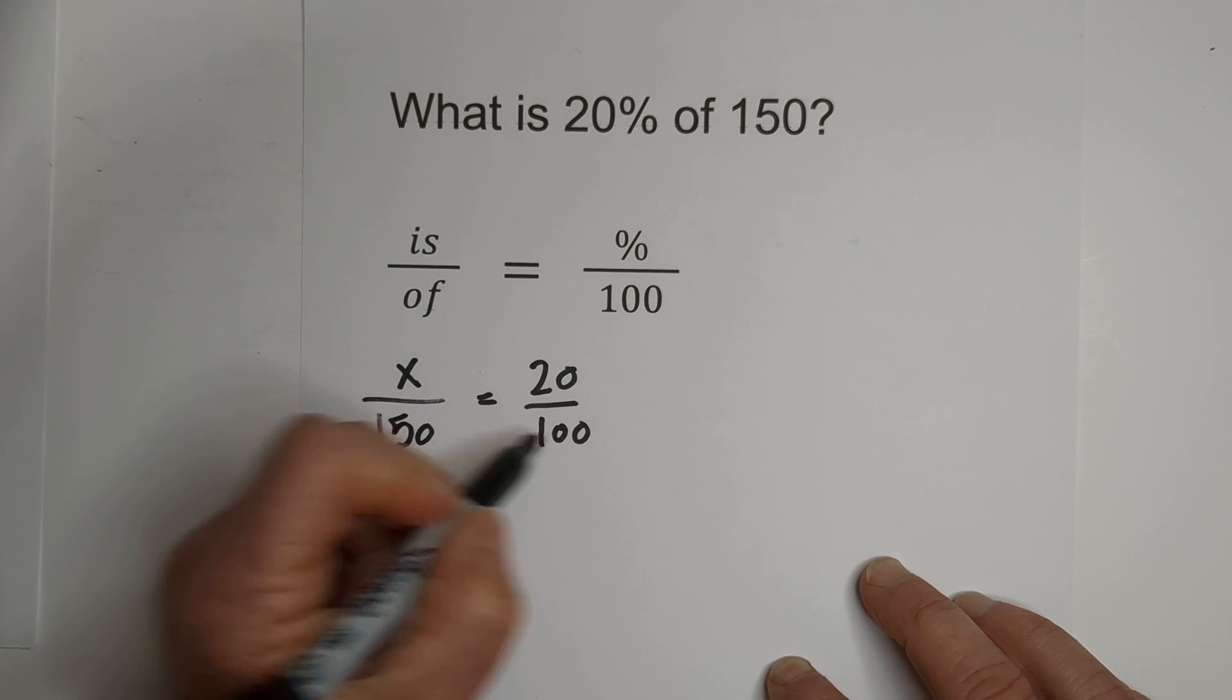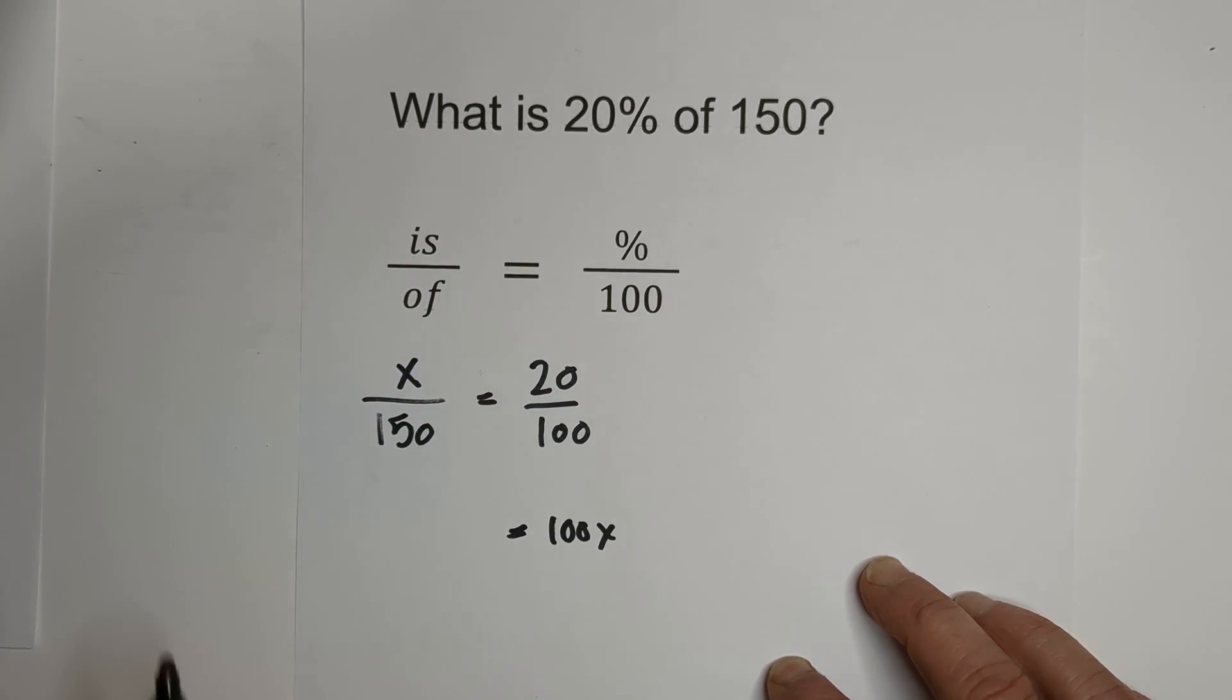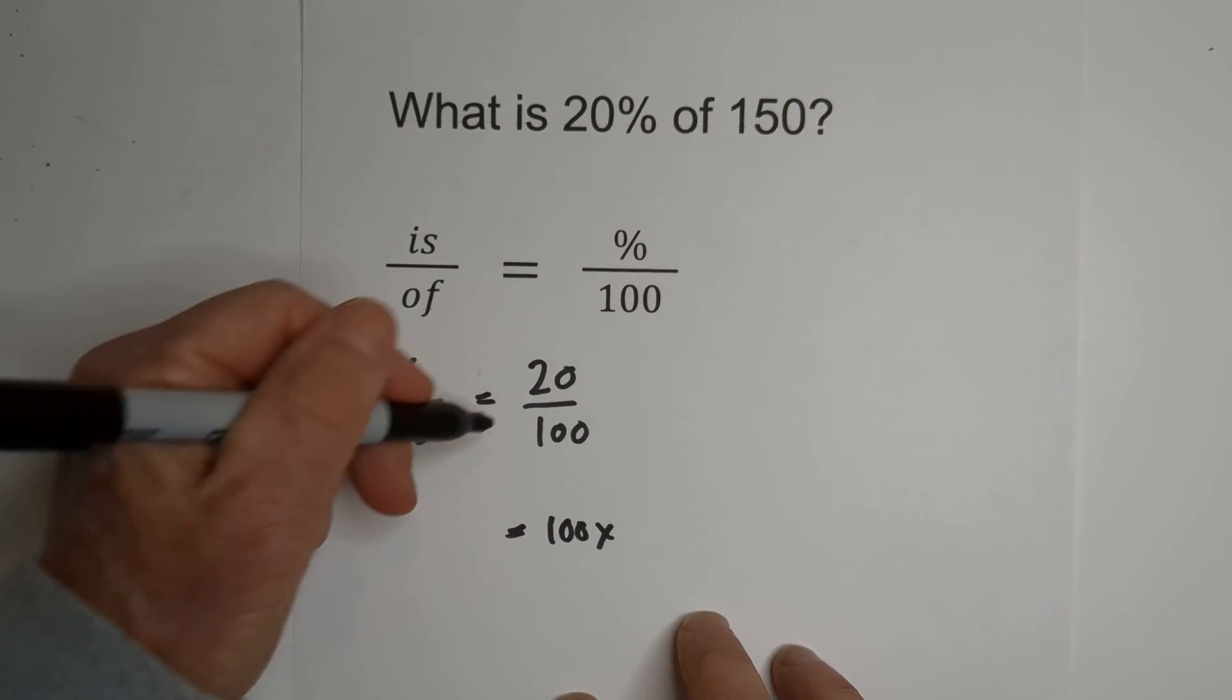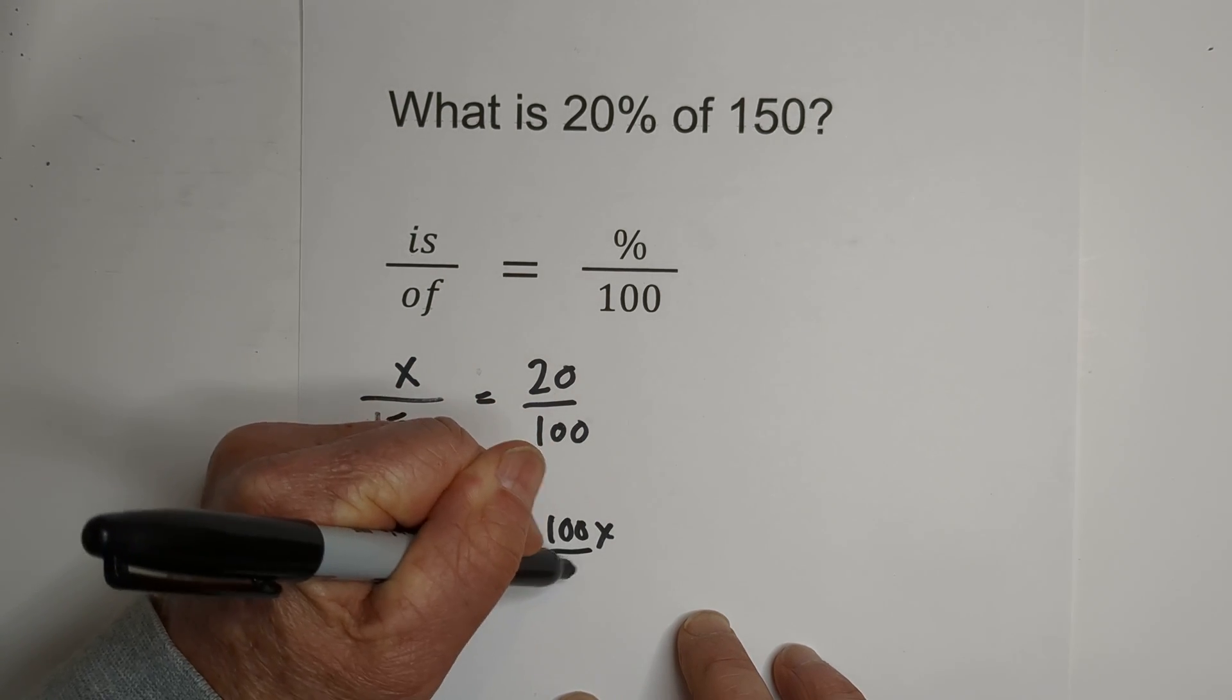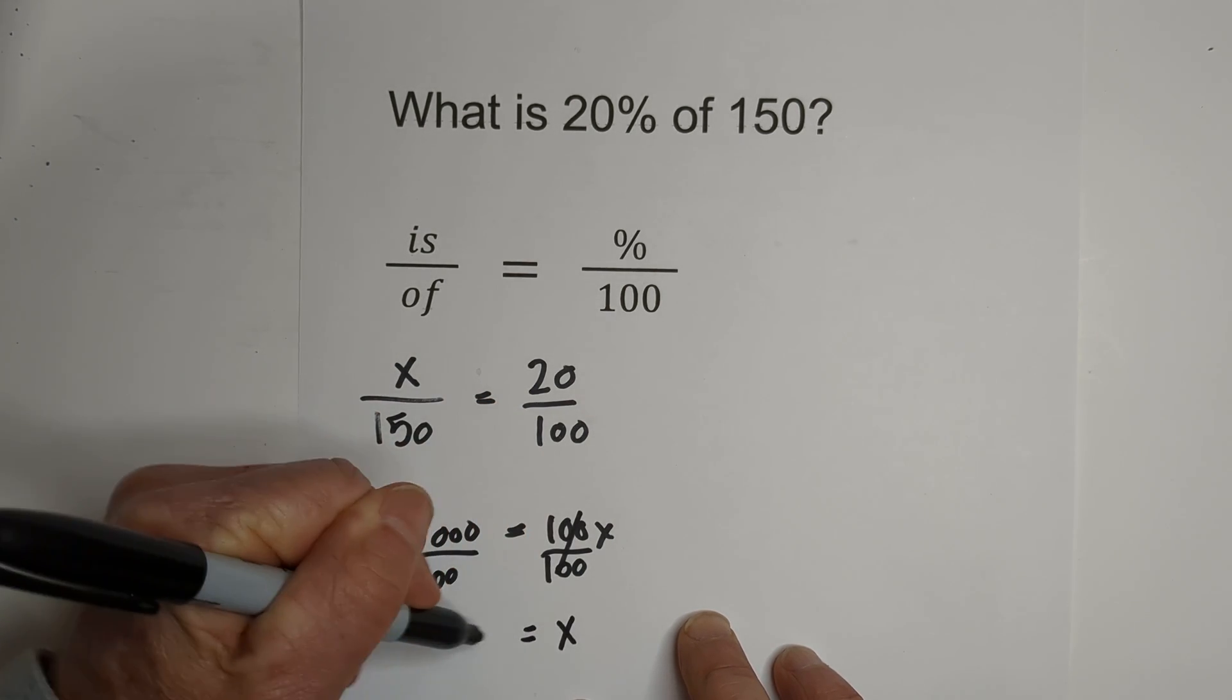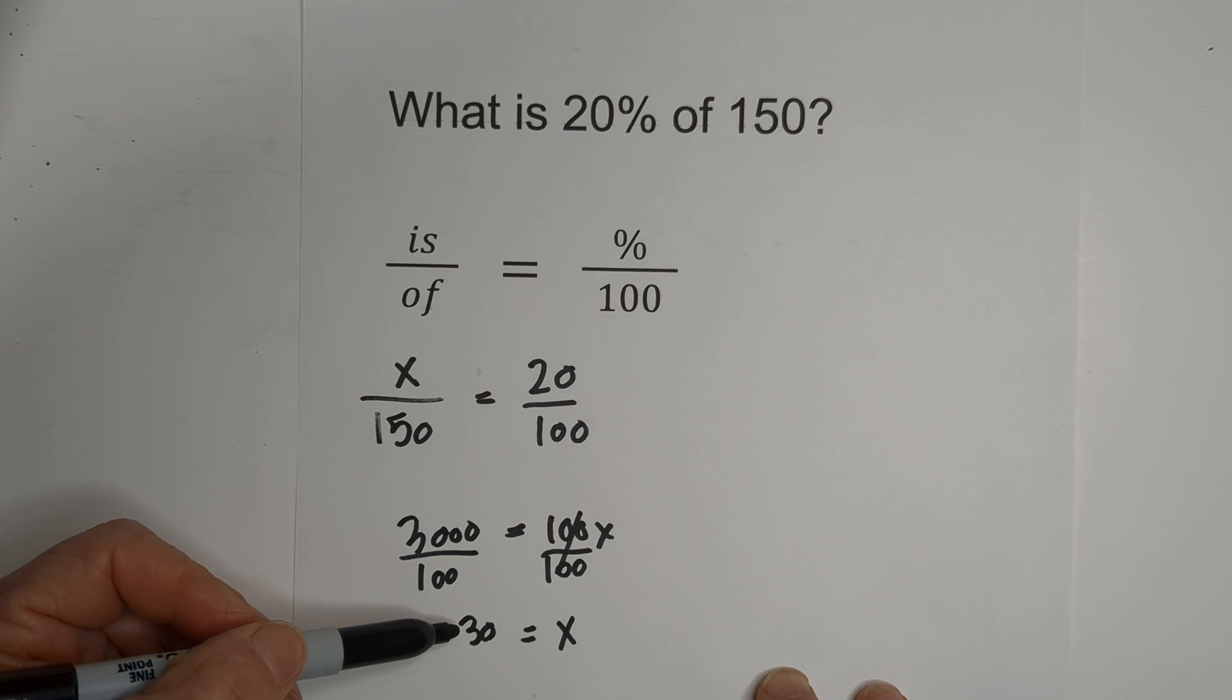Then all we do is we cross multiply. x times 100 is 100x equals 20 times 150. 20 times 150 equals 3000. You then divide through by 100, these cancel, x equals 30. So what is 20 percent of 150? It is 30.